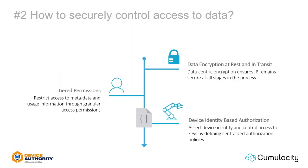And device identity-based authorization: asserting the actual identity of the device or person trying to gain access to that data. If you've got the cryptographic assurance and encryption of that data at rest and in transit, you can rest safe in the knowledge that someone must authenticate themselves and must be the appropriate owner of the key to decrypt it. That gives you a much greater assurance over who's actually accessing that data, as opposed to simply leaving it in clear text.